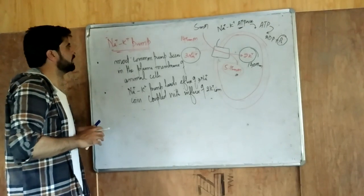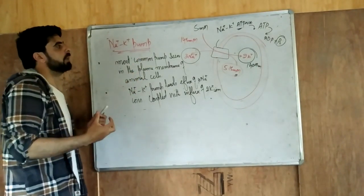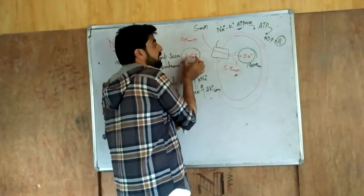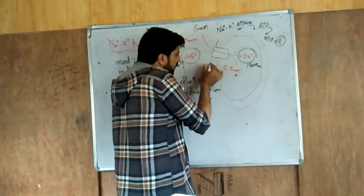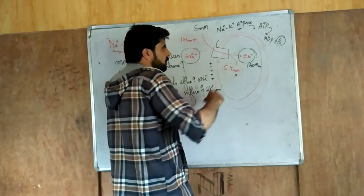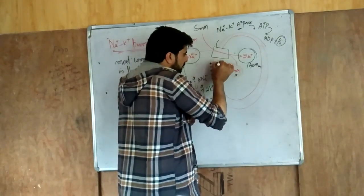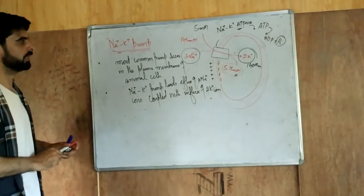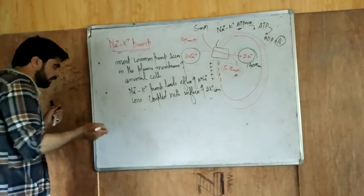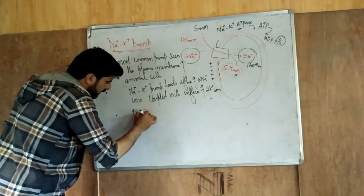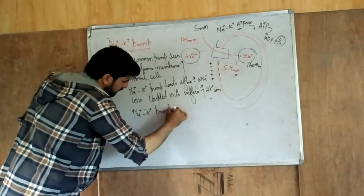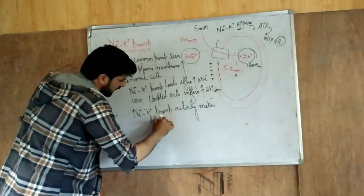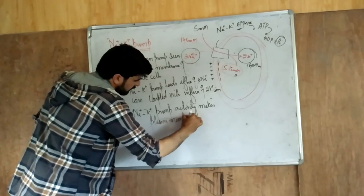Another important point: the sodium-potassium pump makes the membrane polarised. When 3 sodium ions are expelled out, the external part of the plasma membrane becomes positively charged. Two potassiums come in, but the negative charge is more on the inside. This means the inner side of the plasma membrane becomes negative. This positive and negative charge on the external and internal sides makes the plasma membrane a polarised membrane. So the sodium-potassium pump activity makes the plasma membrane polarised.